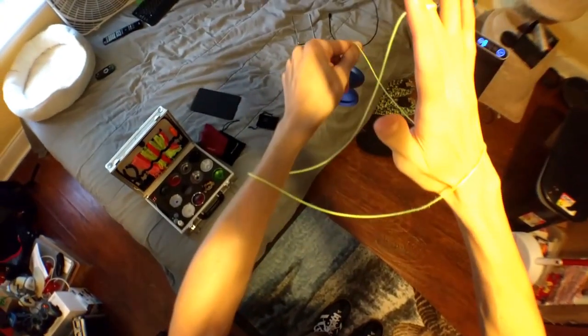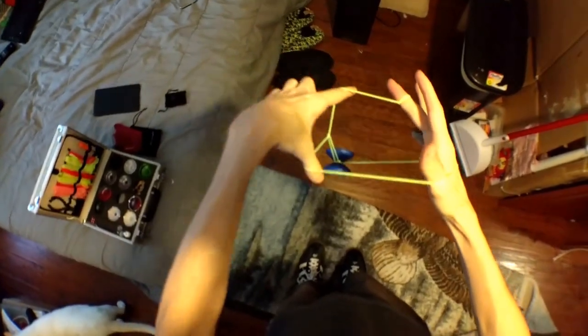And then from there you toss the yoyo in and it gets you into the same thing, same dismount. Another way to dismount: open the string up like this and then just pop the yoyo out.